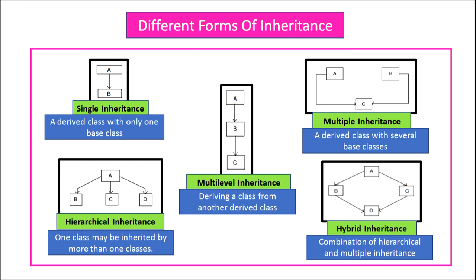In multiple inheritance, a derived class is derived from several base classes. You can see in the figure, C is the child class and A and B are the base classes of the child class C.